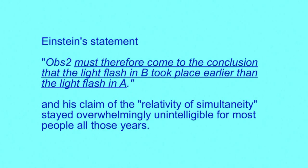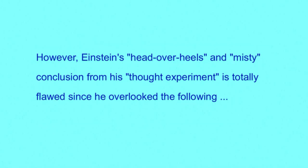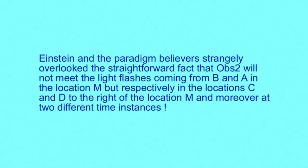So the situation at the moment is the following. But Einstein and the paradigm believers overlook the straightforward fact that OBS-2 will not meet the laser flashes coming from B and A in location M, but respectively in locations C and D to the right of location M, and moreover at two different time instances.